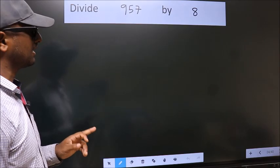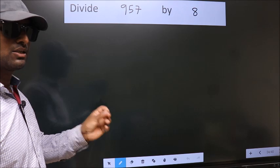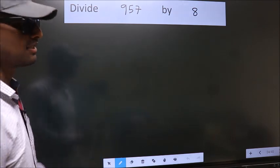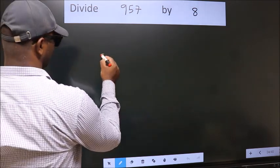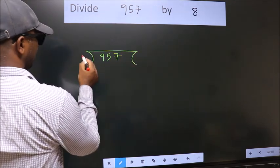Divide 957 by 8. To do this division, we should frame it in this way. 957 here, 8 here.